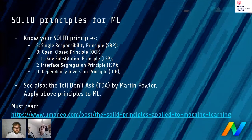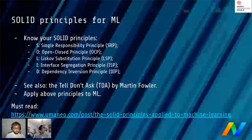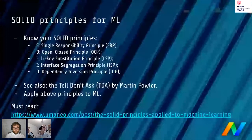The Liskov Substitution Principle is about replacing an object with another object of the same base type. For instance, take a machine learning model on pre-processed data — just swap the model object for a different one and your code should still work the same way, provided the different model accepts the same inputs and outputs. You can also do optimization to automatically choose the model.